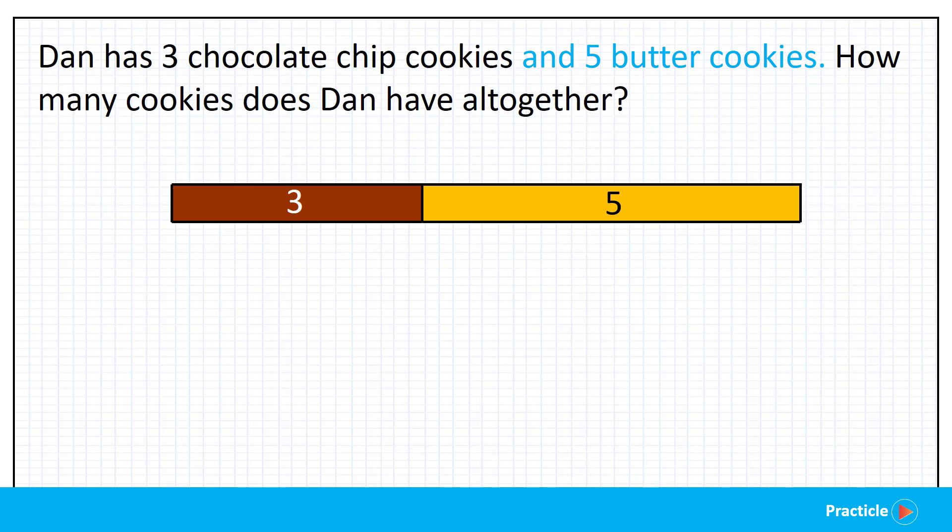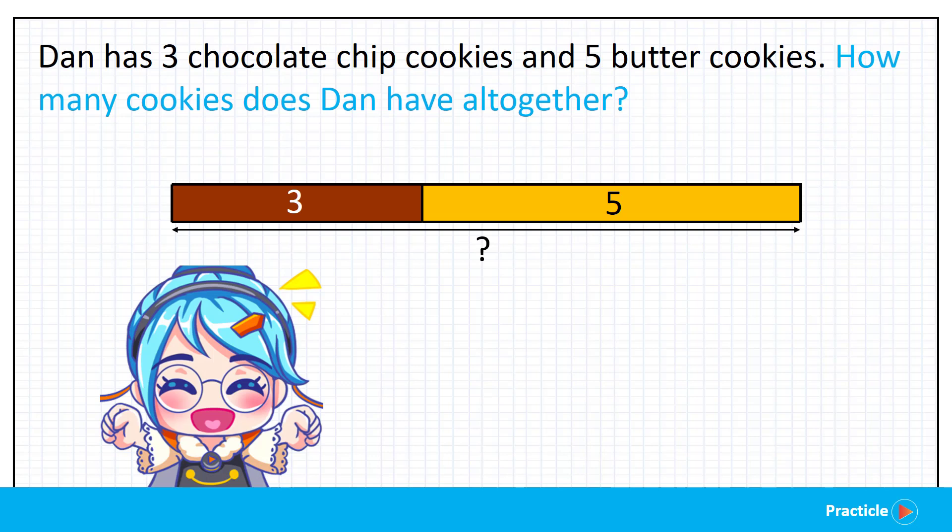Now going back to the question, we are asked to find how many cookies Dan has all together. So do you know which part of the model we are supposed to find? If you spotted the keyword all together, you would have guessed that we can put these two parts together to form the whole. So let's label this part with a question mark to remind us that this is what we want to find. And with that, you did it! You have just finished drawing your first part part whole model.